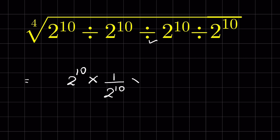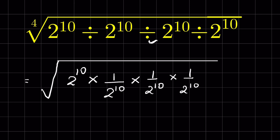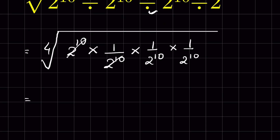Convert this division also into multiplication, so we get 1 upon 2 raised to the power 10, and this also becomes 1 upon 2 raised to the power 10, all under the fourth root. Now cancel terms, leaving 1 upon 2 raised to the power 10 times 2 raised to the power 10, under the fourth root.